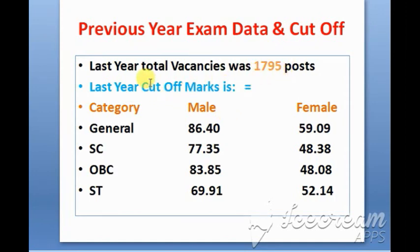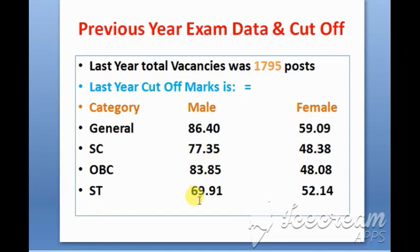You can see the cut-off on the screen. The General category cut-off was 86, and female was 59. SC male was 77 and female was 48. OBC male was 83 and female was 48. ST male was 69, female was 52, and the second part cut-off was 42. The first paper cut-off is missing.